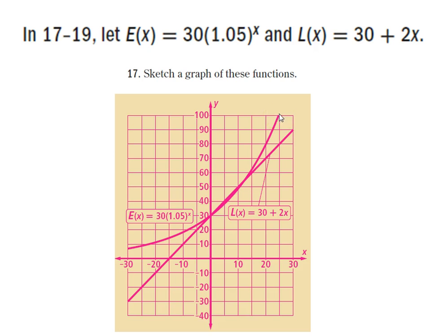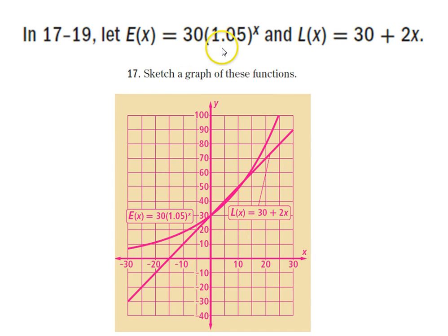Once all points are plotted, that's where these lines come from. Graphing in the first quadrant is really all you need for these two functions — going into the negatives is optional. What this shows us is the difference between exponential and linear functions on a graph: exponentials are curved and linear functions are straight.